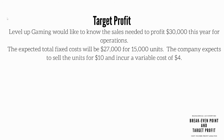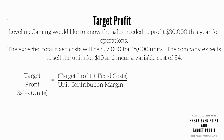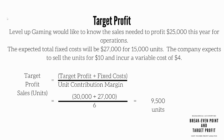Level Up Gaming would like to know the sales needed to make a profit this year for operations. The expected total fixed costs remain the same at $27,000 for 15,000 units. The company expects to continue to sell the units for $10 and incur a variable cost of $4. Let's start with target profit in sales units. We'll take target profit plus fixed costs divided by unit contribution margin. So $30,000 plus $27,000 divided by 6 comes out to 9,500 units needed to be sold in order to make the target profit.